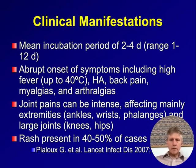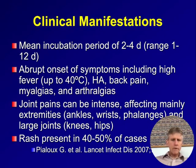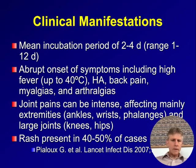Clinically, the incubation period is short, typical for arboviral infections — a few days on average, up to nearly two weeks. This is followed by the abrupt onset of symptoms including high fever, headache, back pain, muscle aches, and joint pains. The arthralgias can be quite intense, affecting both large and small joints, in particular the feet, knees, hands, and wrists. A rash may be present, but is only seen in about half of cases.